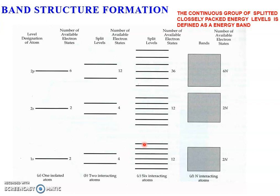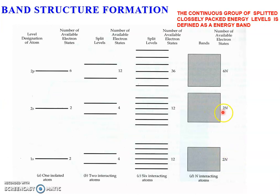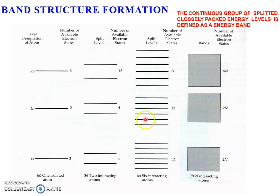For better understanding, here we show how energy bands form for different orbitals. For the 1s orbital, which contains only one orbital, it can split into two levels when two atoms interact. For six atoms, twelve electron states and six energy states will arise. For N atoms, 2N energy levels will exist. Similarly for 2s, there will be 2N energy levels. Whereas for 2p, there will be 6N energy levels because the 2p orbital contains six electrons and has 6N available electronic states. The number of energy levels is N in each case; only the number of states changes depending on the orbital.